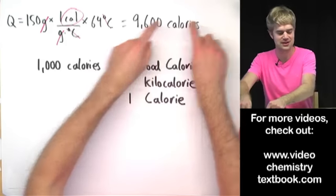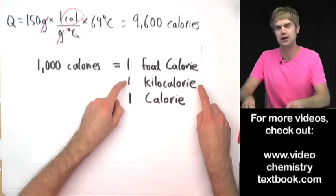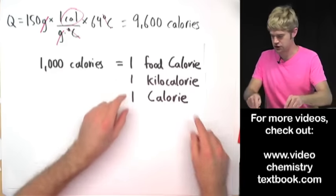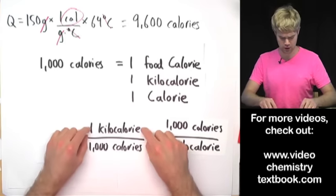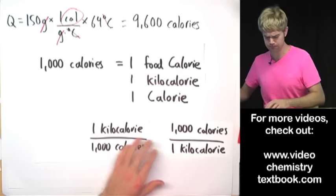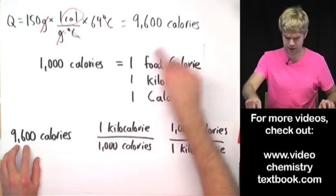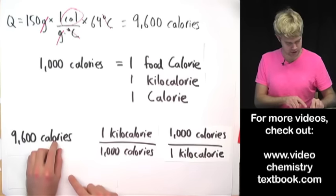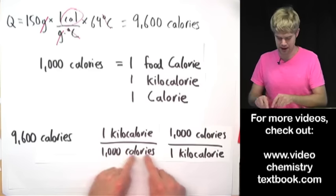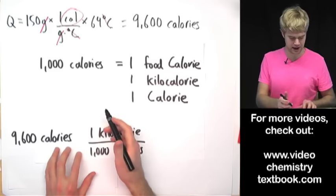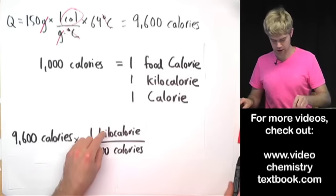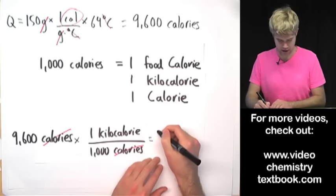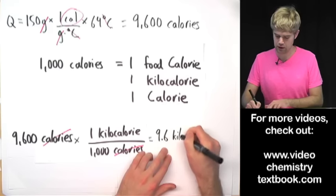We need to convert from these small calories into food calories, or kilocalories. From the relationship of 1,000 small calories per 1 kilocalorie, we can write two conversion factors: 1 kilocalorie over 1,000 calories, or its reciprocal. Starting with 9,600 calories, we multiply by 1 kilocalorie over 1,000 calories. Calories on top and bottom cancel, and we end up with 9.6 kilocalories.